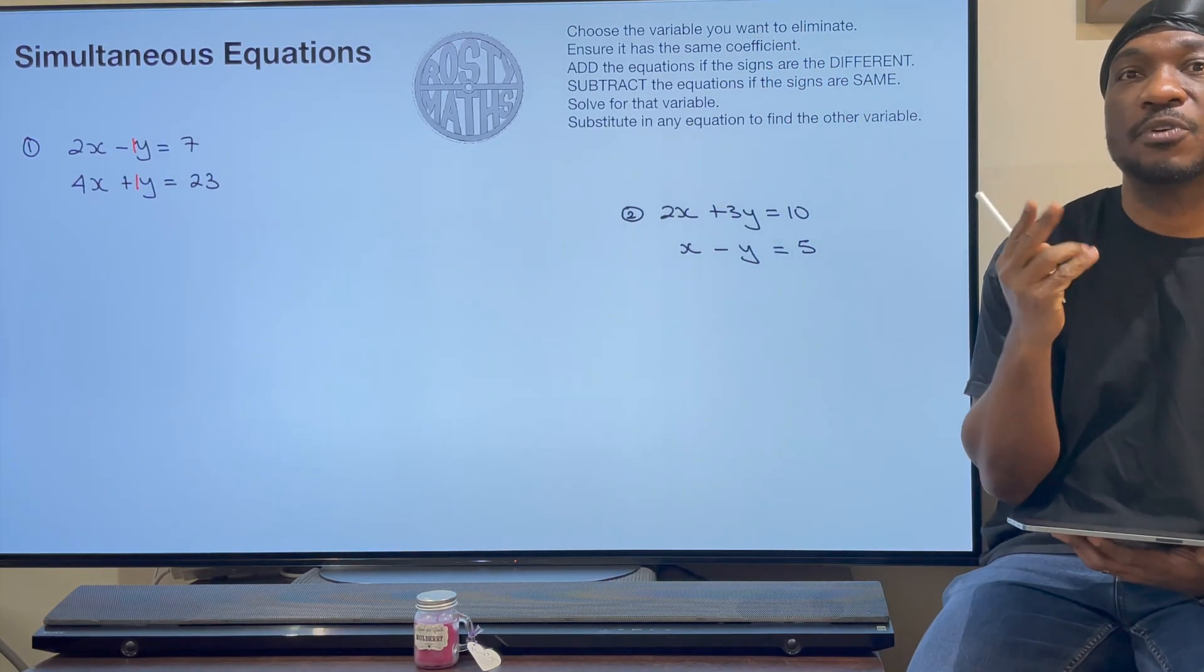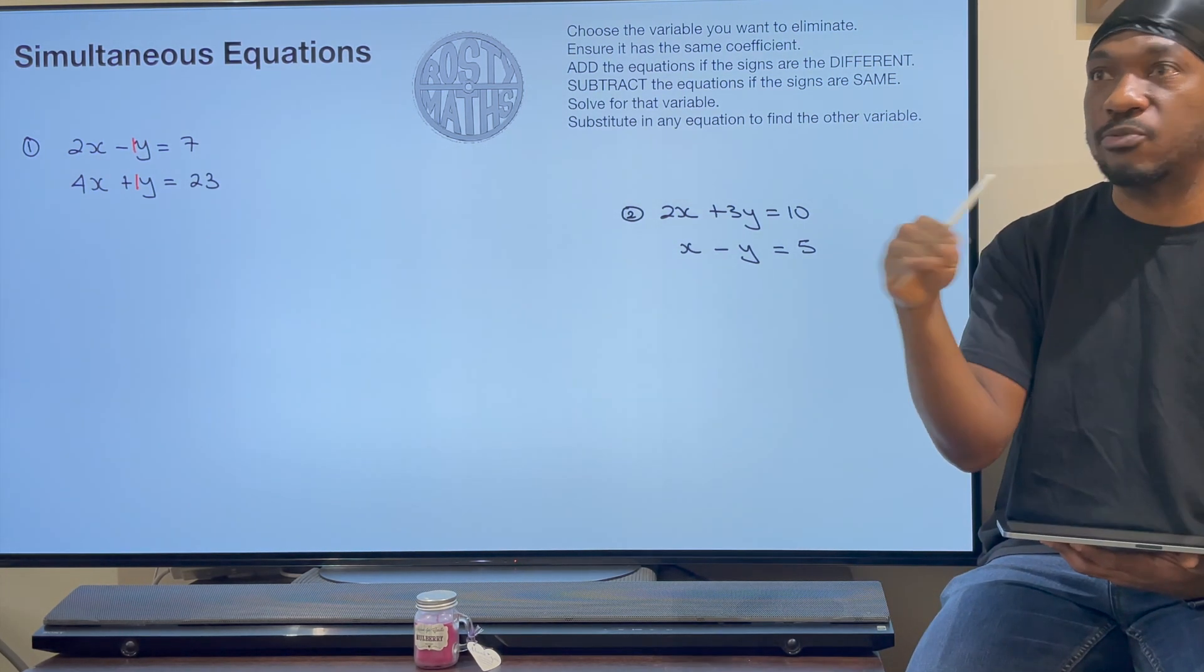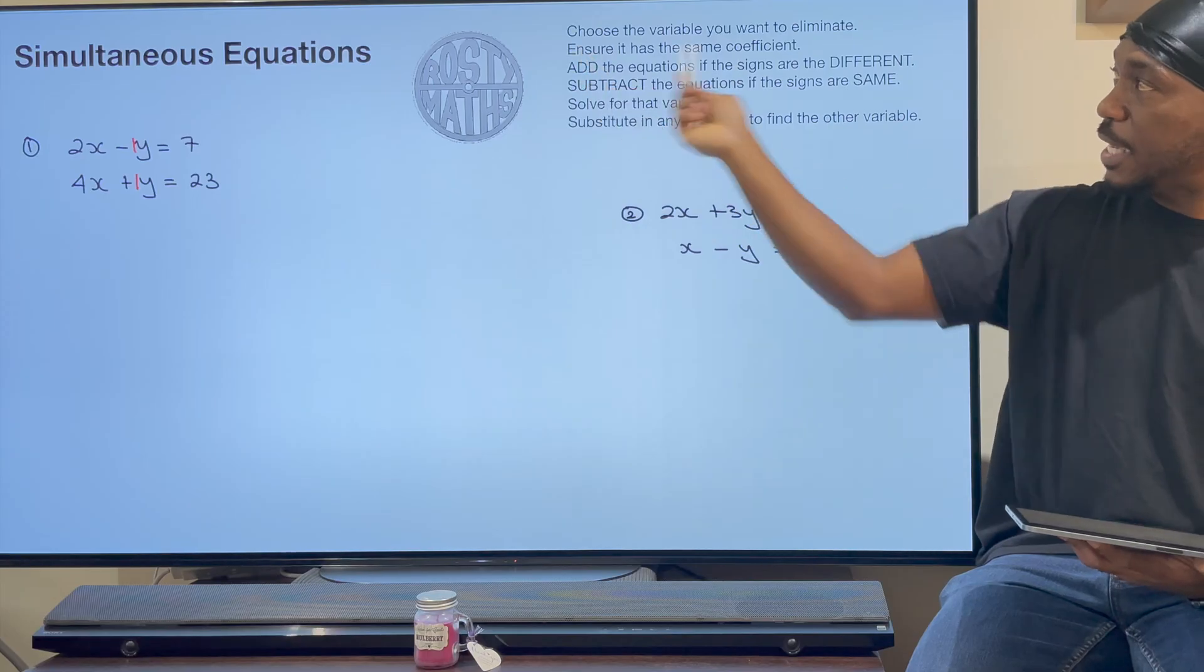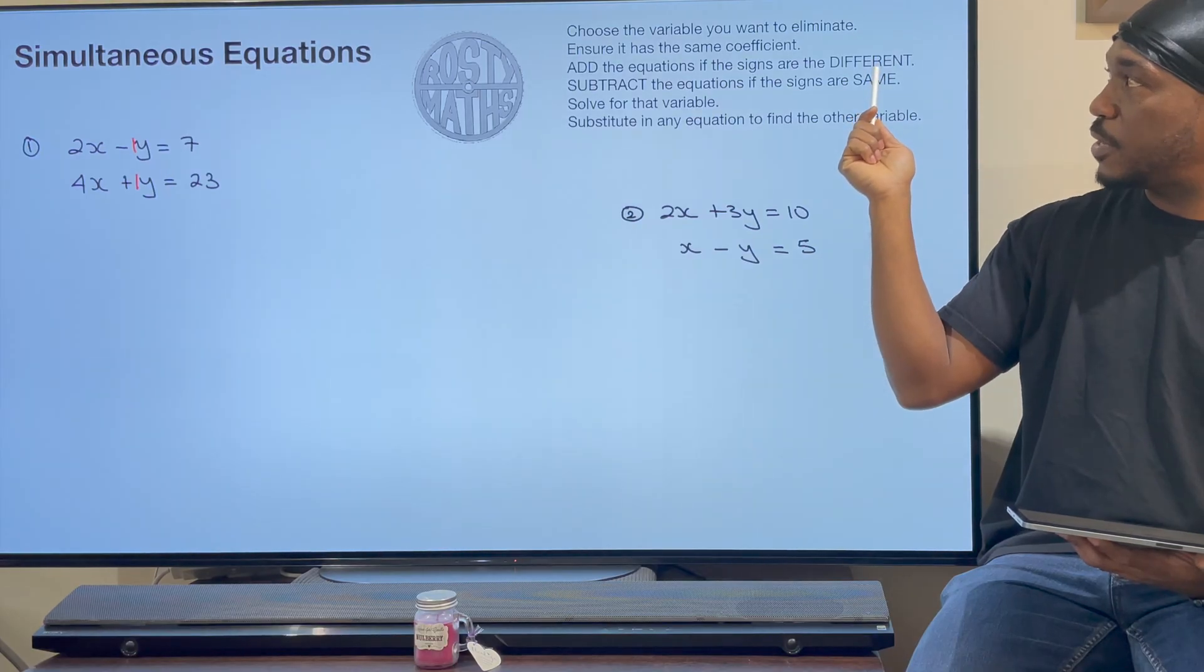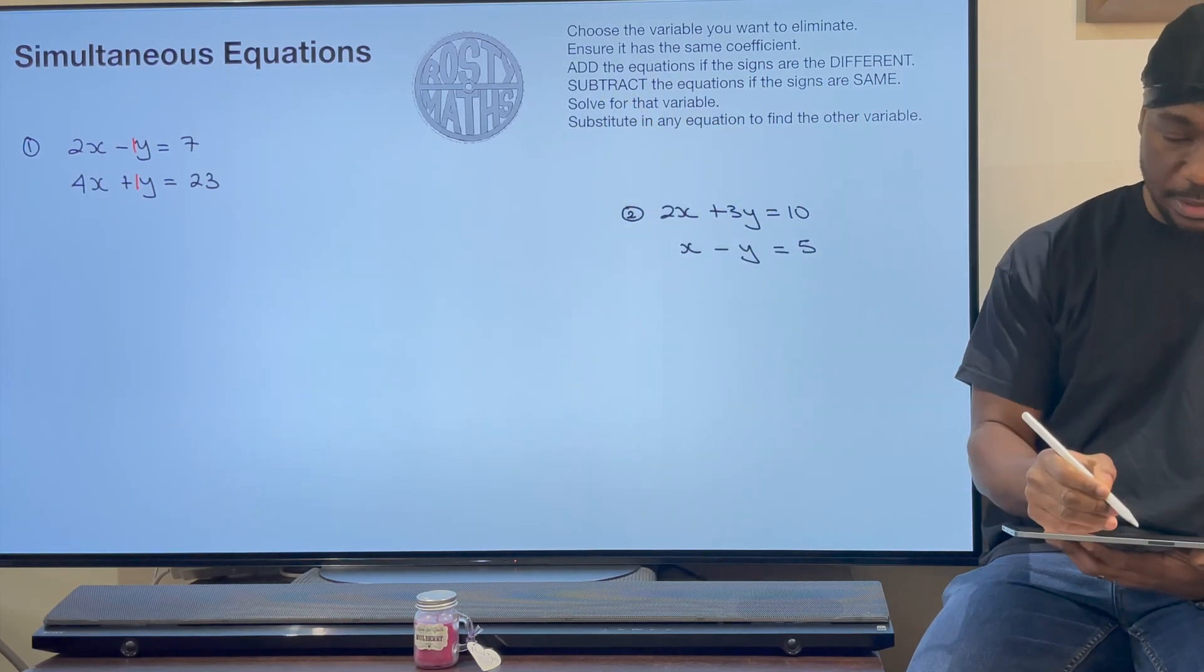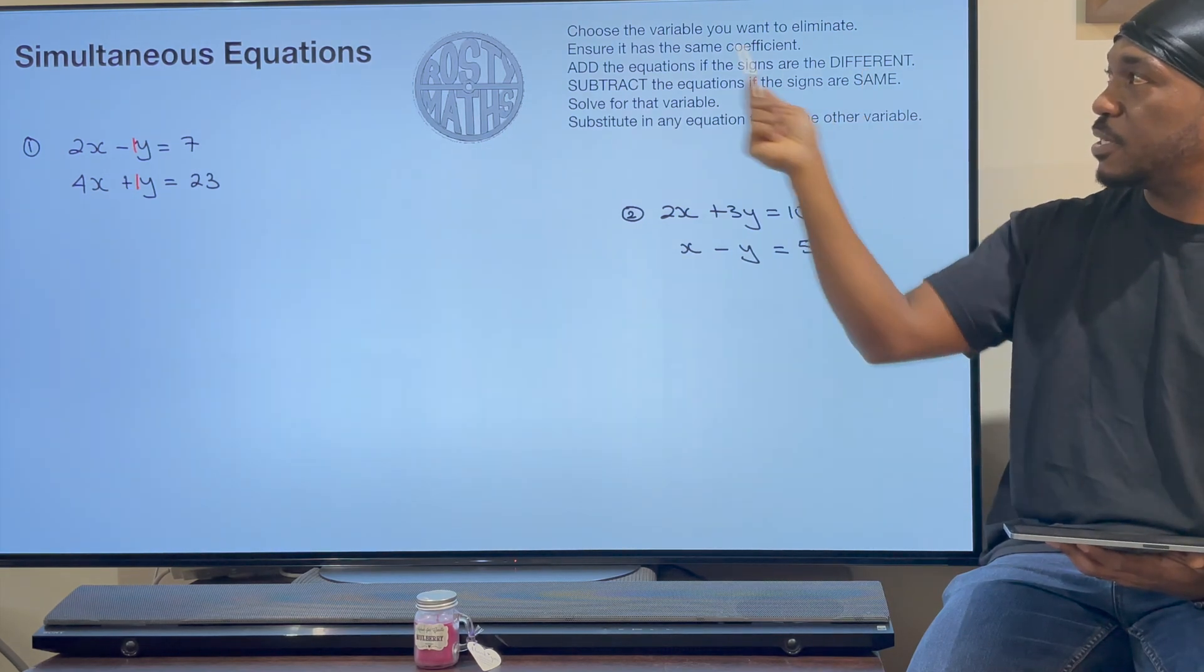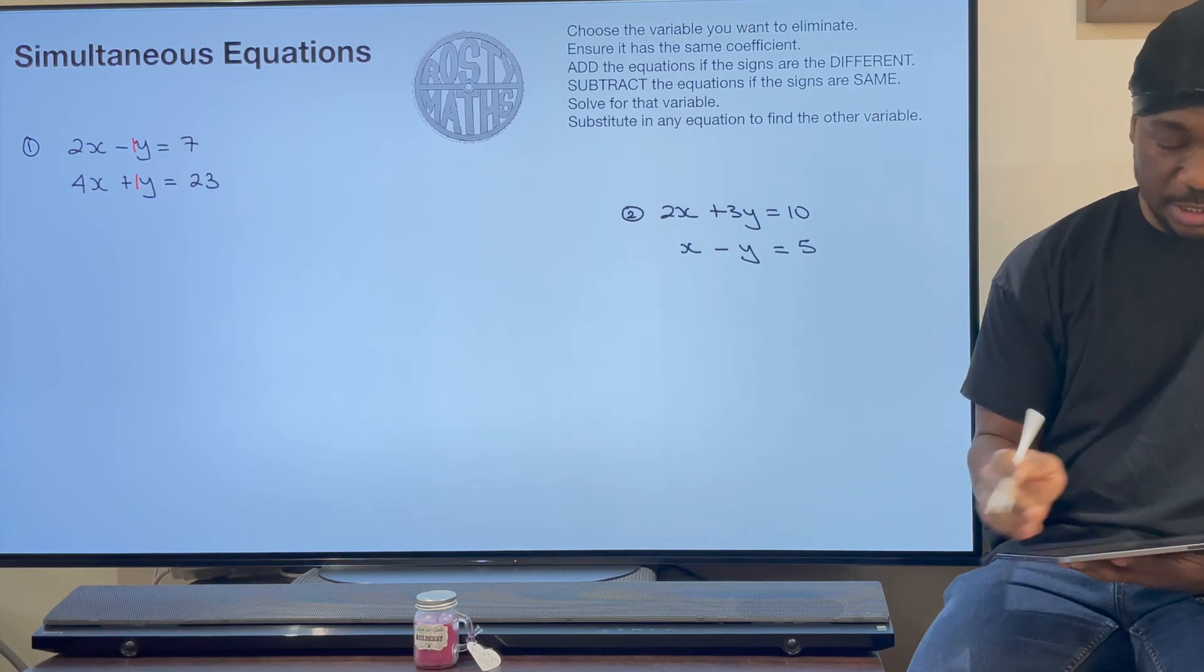I've chosen my variable I want to eliminate. By the way, I forgot to mention the method I'm using is the elimination method, which means I need to eliminate or get rid of or cancel out one of those variables first. Ensure it has the same coefficient. It does. Now I need to check the coefficient. If the signs are different, I should add the equations. If the signs are the same, I should subtract the equations. The signs are different because this one is negative and that one's positive. So I should add the equations.